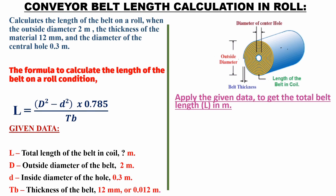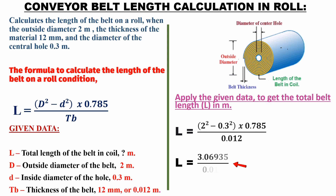Applying the given data to get the total belt length L in meters: L is equal to the square of 2 minus the square of 0.3, multiplied by 0.785, and then divided by 0.012. This gives 3.06935 divided by 0.012. Therefore, the obtained conveyor belt length in roll, L, is 255.77 meters.